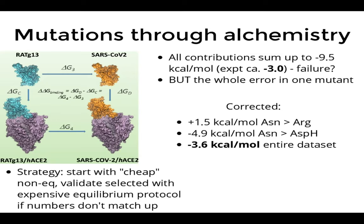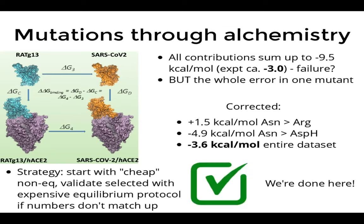We cannot claim perfect precision for every single mutation, but due to error cancellation — some errors going up, some going down relative to experiment — we end up surprisingly close to the experimental number. We can then analyze individual mutation values and identify which were important and which were likely neutral random mutations that provided no advantage to the virus.